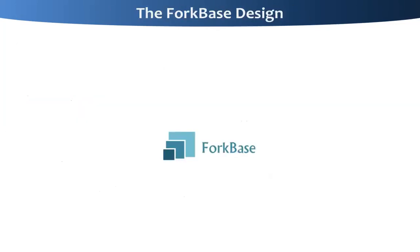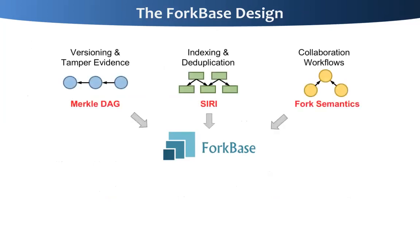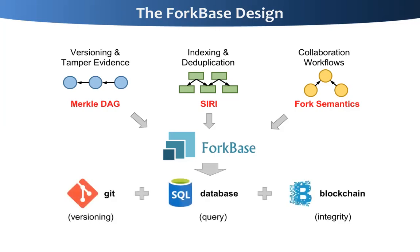To this end, we propose our system called 4Base to integrate several features to address the pain points. First is the Merkle DAG to provide versioning and tamper-evident evidence. The second is about the SEUI index, which is a new kind of index to support data deduplication very effectively and efficiently. The third is to integrate Git semantics to support collaboration workflows. 4Base integrates these features to provide a Git for data in a database, and the solution is also applicable to blockchains because data in the storage layer of the blockchain are branchable.